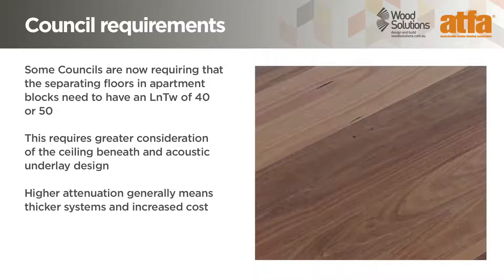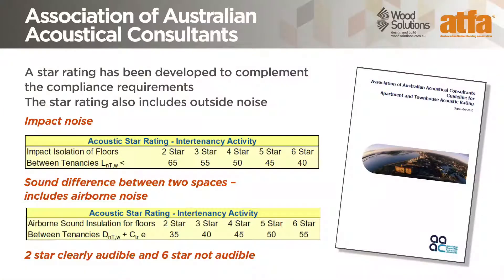Higher attenuation also generally means thicker systems and increased cost. The Association of Australian Acoustical Consultants provides guidelines for the acoustic rating in apartments and townhouses, which can be downloaded from the AAAC website. The guidelines provide a star rating to better meet owner expectations and complement NCC compliance requirements. The floor system is not the only contributor to the star rating, as noise from outside, through walls and lift wells, also affects it. The system rates two stars as clearly audible noise transmission through to six stars, at which level noise is completely inaudible. The table shows two factors: impact noise through floor systems and airborne sound between tenancies. An LnTW of 50 for impact sound is given a four-star rating.